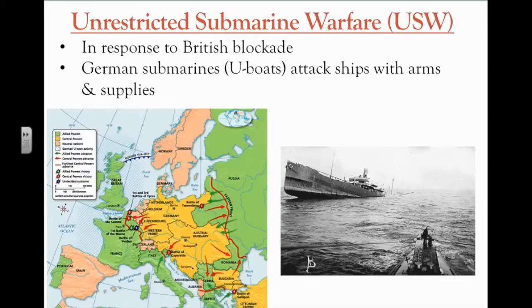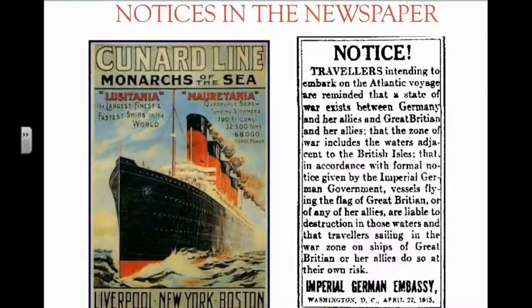Unrestricted submarine warfare was successful and caused heavy losses to allied shipping. The fleet sank 11 million tons of shipping. The United States disliked Germany's policy of unrestricted submarine warfare because, as a neutral nation, they felt that American merchants should be able to trade with all nations without fear of being torpedoed. Since Germany had been open about the policy and had warned American citizens and merchants in newspaper ads — like this notice that appeared next to an ad for the Lusitania — they felt that unrestricted submarine warfare was a fair policy.